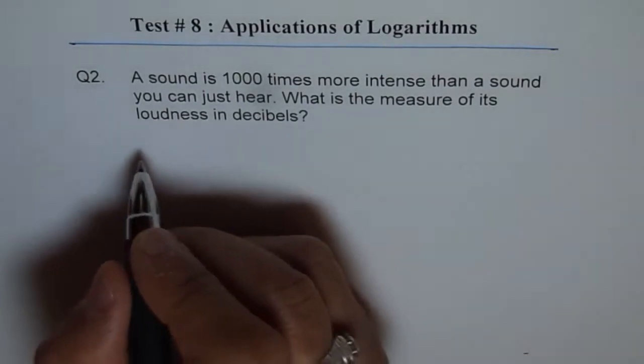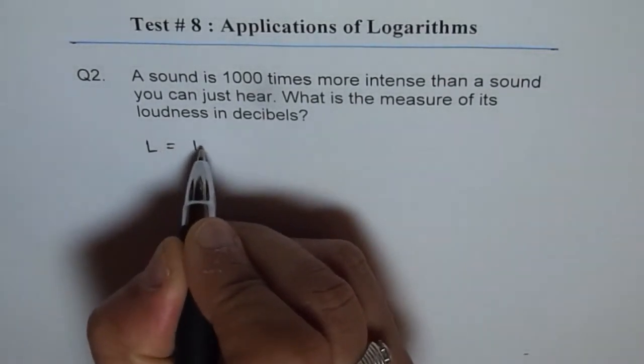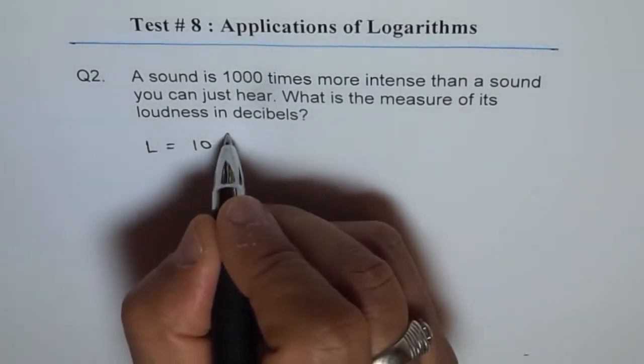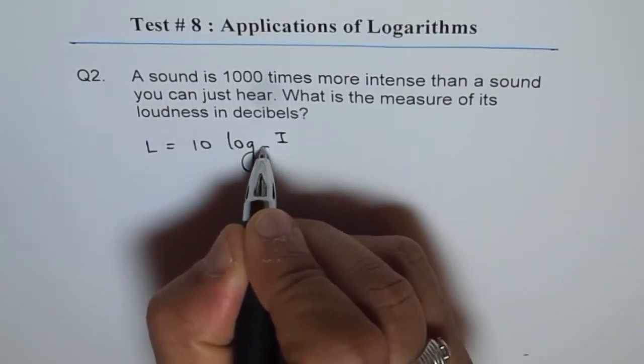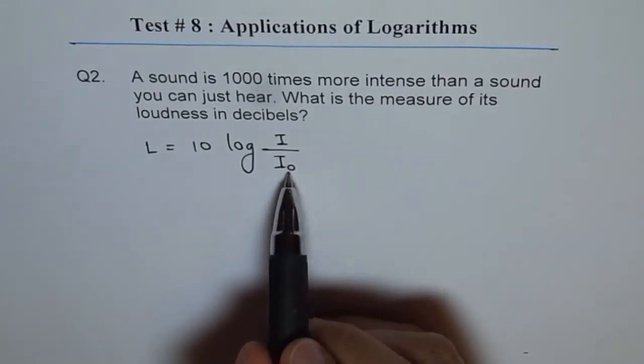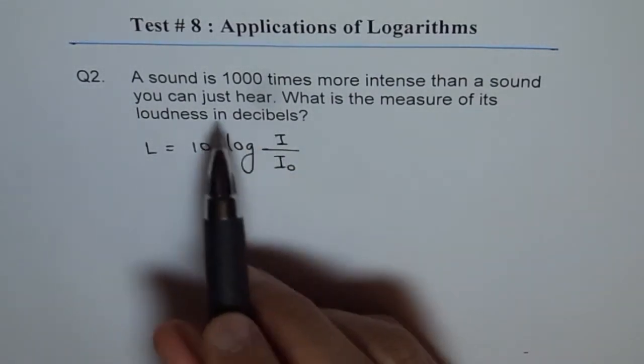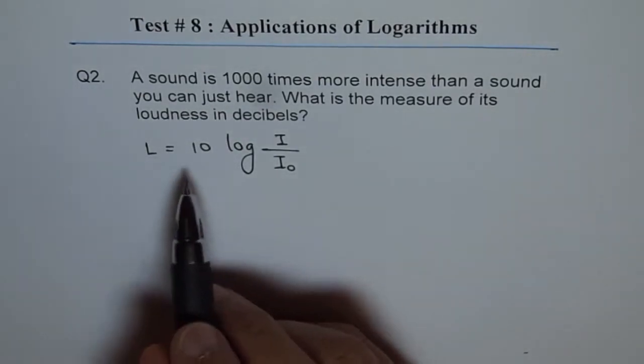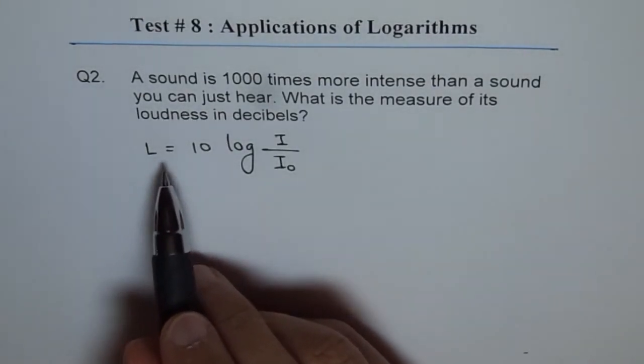The formula is L equals to 10 times log of I over I₀, where I₀ is the intensity of sound which you can just hear. Do you see that? And L is the loudness of the sound.